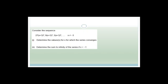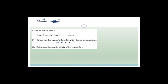Next question: consider the sequence 27(x+3)², 9(x+3)³, 3(x+3)⁴ for x ≠ −3. Determine the values of x for which the series converges. For a geometric series to converge, the common ratio r must satisfy −1 < r < 1.